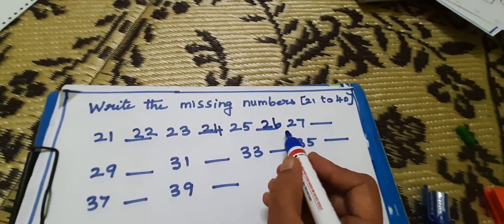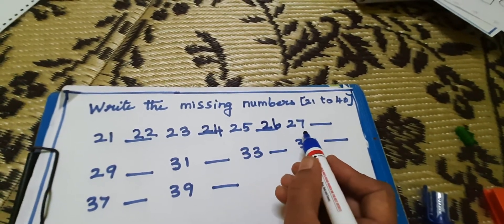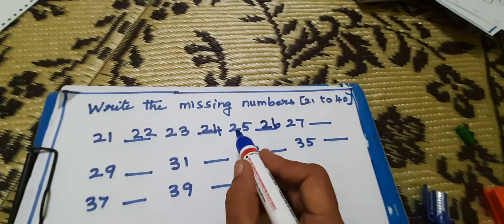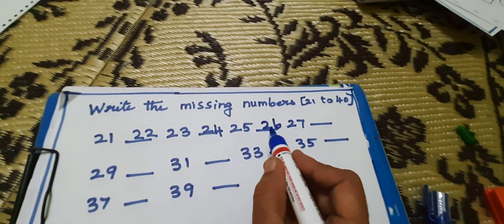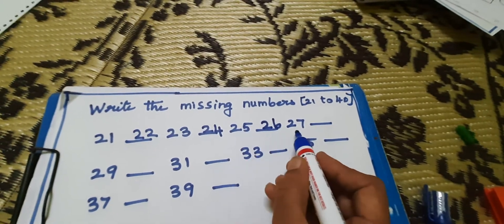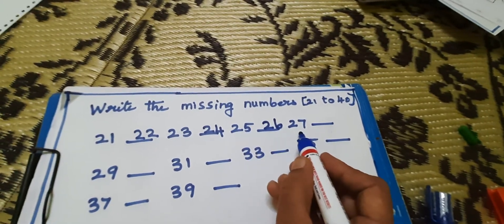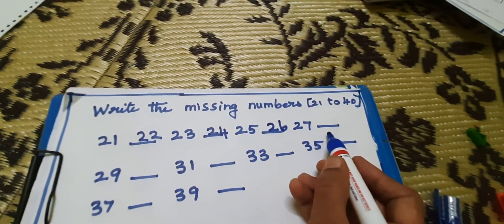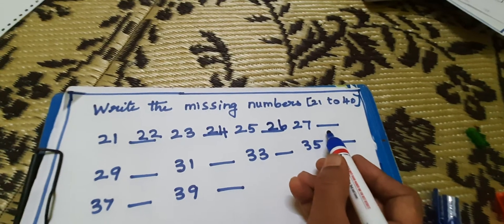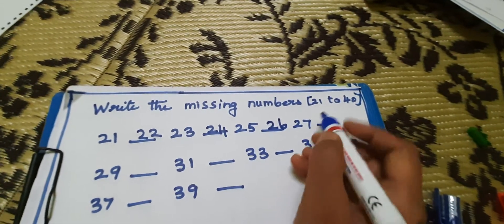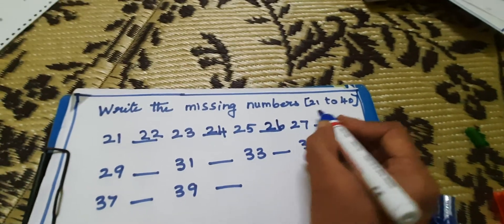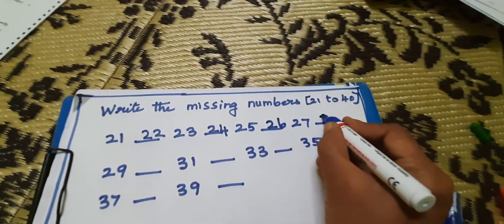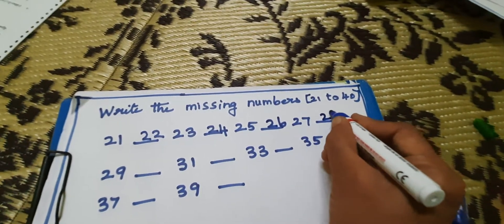27, 27, 27. 25, 26, 27. Then 28, 28, 28, 28.